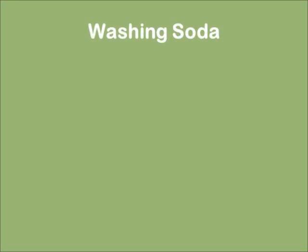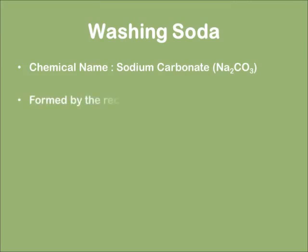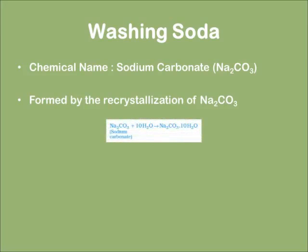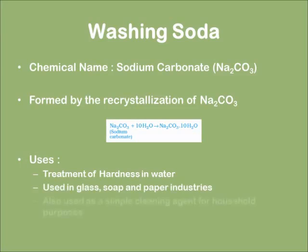Now let's learn about washing soda. The chemical name of washing soda is sodium carbonate and the formula is Na2CO3. This is formed by the recrystallization of sodium carbonate. The uses of washing soda are: treatment of hardness in water, use in glass, soap and paper industries, and as a simple cleaning agent for household purposes.